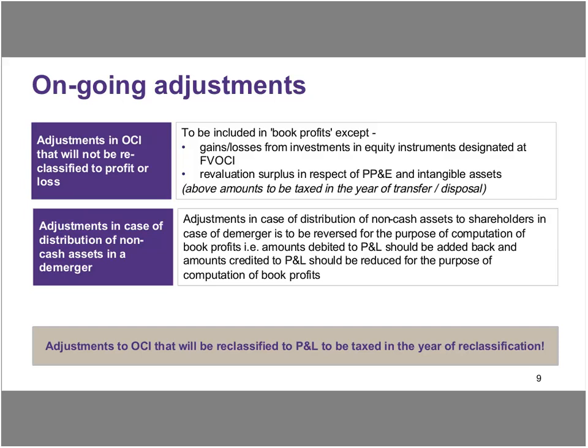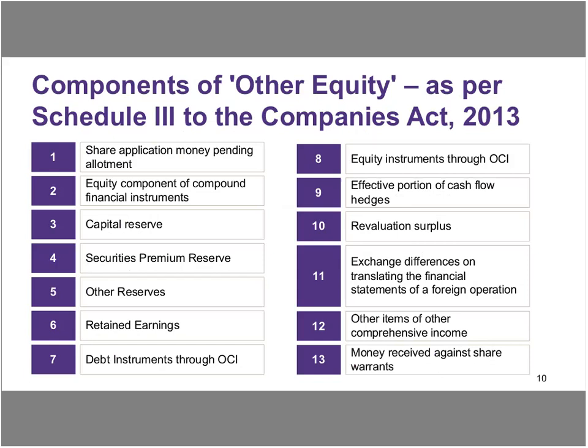On a very practical aspect, most of such circumstances would be the latter — meaning there will be credits to P&L on account of these adjustments, which would need to be reversed for the purpose of computation of book profits. Apart from that, there are items in Other Comprehensive Income which will be reclassified to the P&L and they will be taxed in the year of reclassification. With that, we move on to the next concept of other equity, which is going to play out throughout our discussion as well as throughout the MAT computation exercise that you undertake.